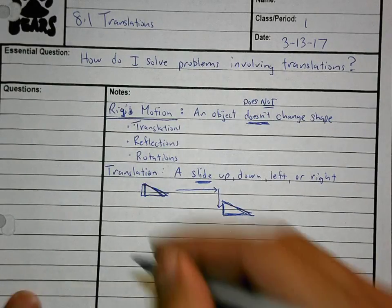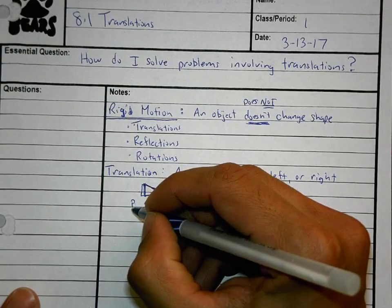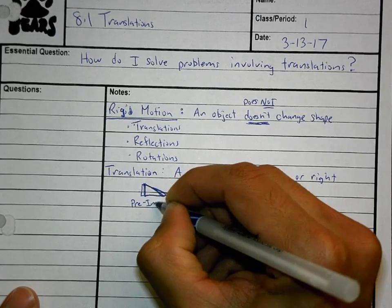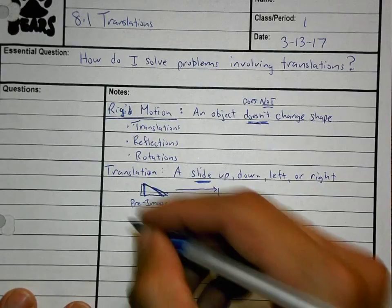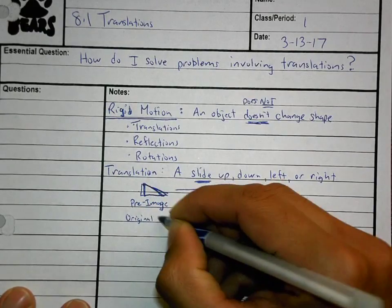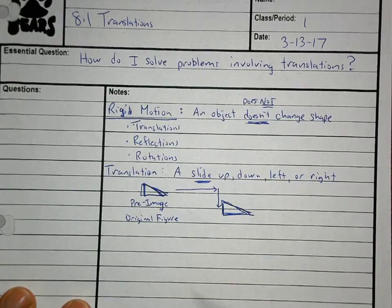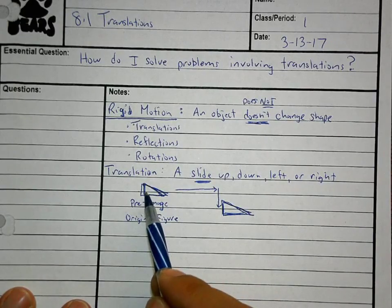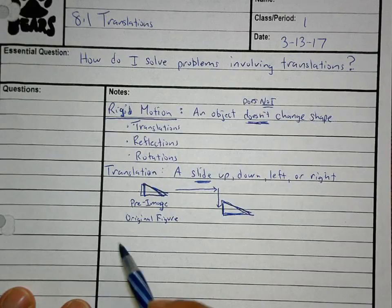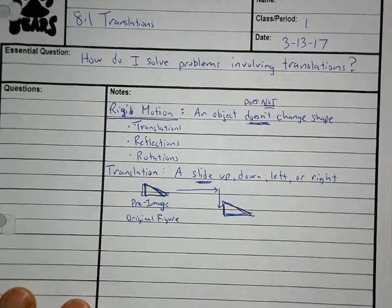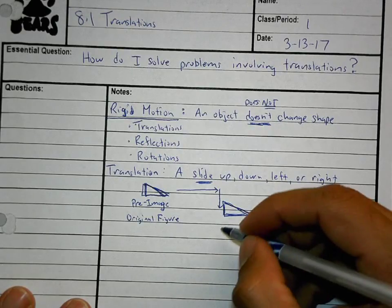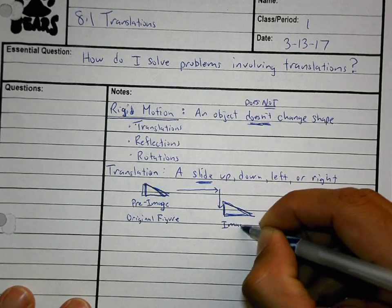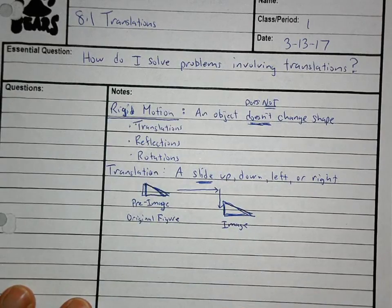When you do a translation, there's this thing called the pre-image. The pre-image is the original figure. So this is the pre-image — this is the one that it started with. And then after you translate something, this is called the image. Pre-image is before; image is after.